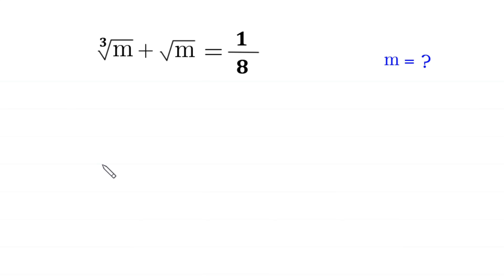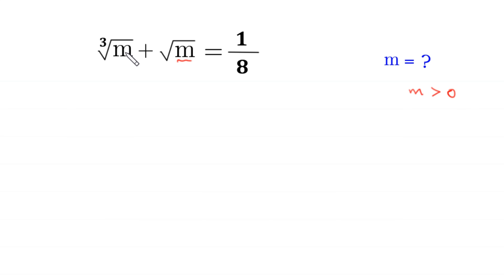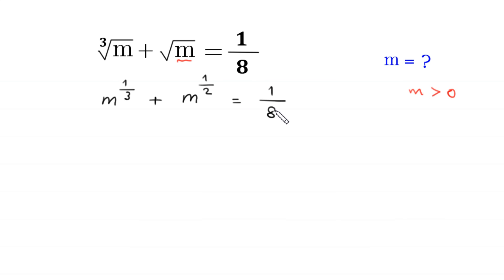Hello everyone, you are welcome. Today we solve this very nice radical equation: cube root of m plus square root of m is equal to 1 over 8. Our job is to find all possible values of m. Since m is under a square root, for real solutions m must be greater than 0. We can write cube root of m as m to the power 1 over 3, and square root of m as m to the power 1 over 2, equal to 1 over 8.